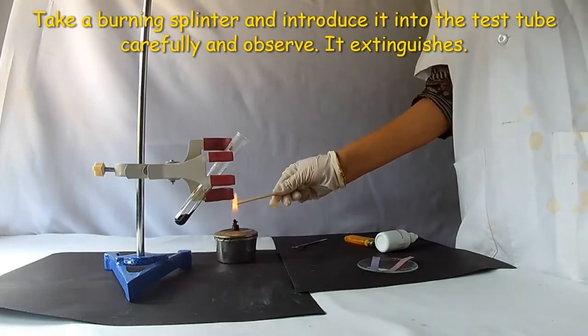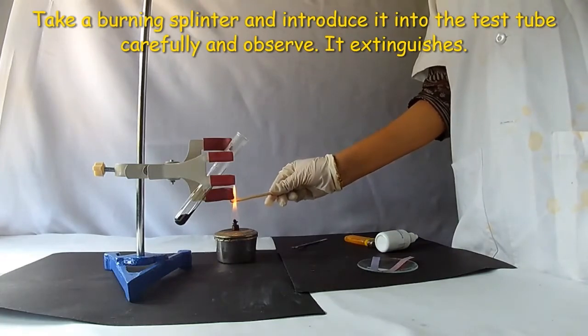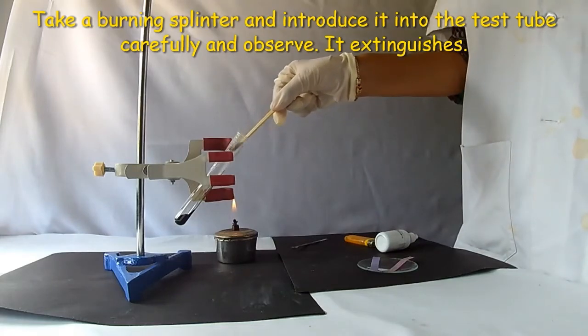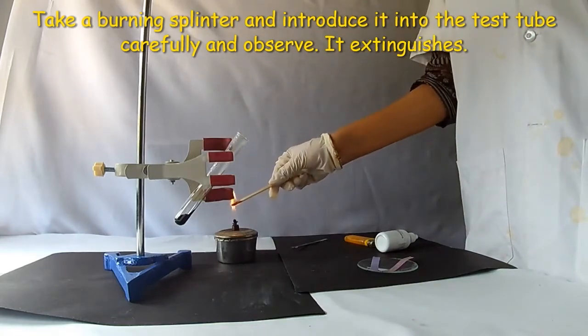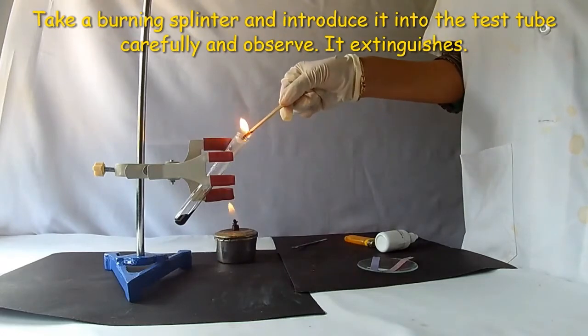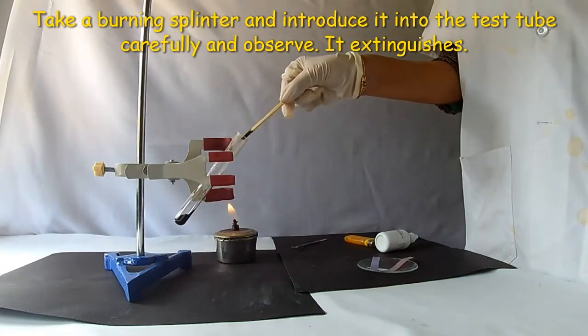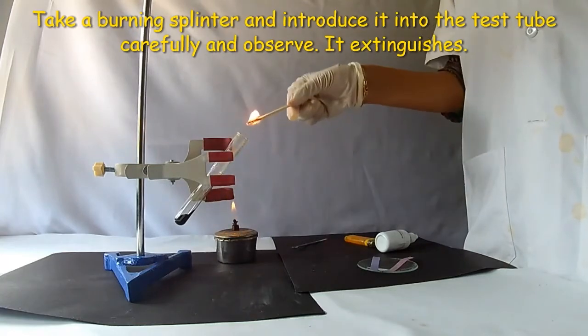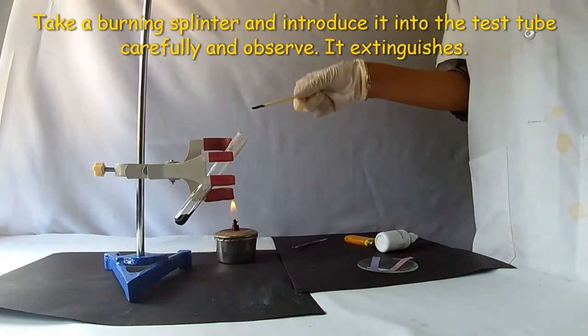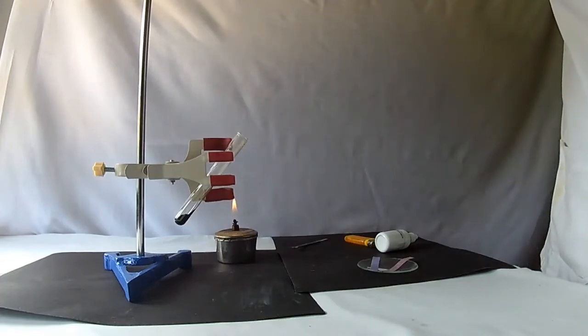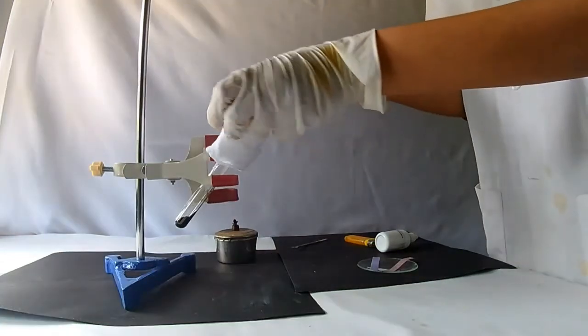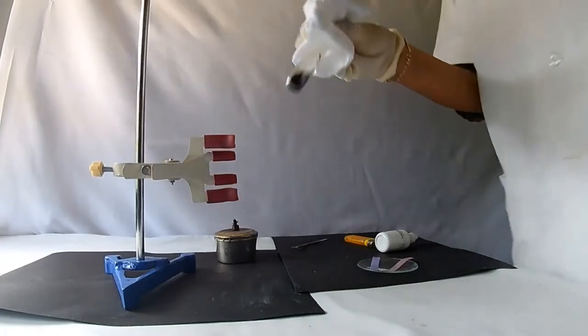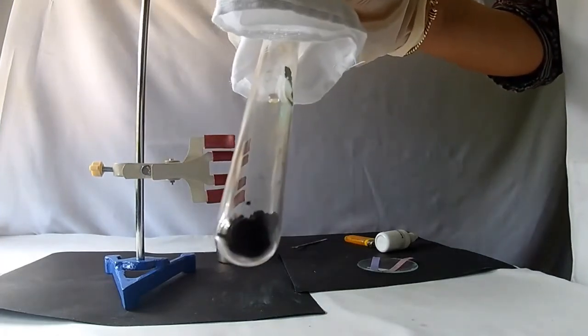Now, introduce a burning splinter into the test tube. It extinguishes, proving that carbon dioxide is not a supporter of combustion. Observe the color of salt. It has changed to black.